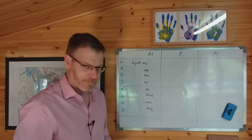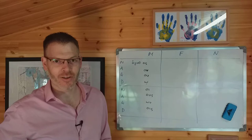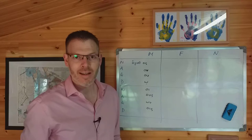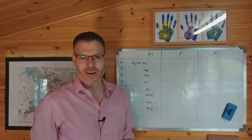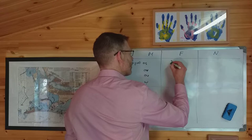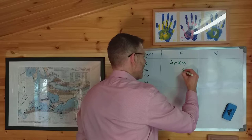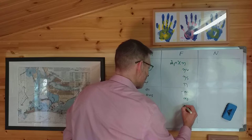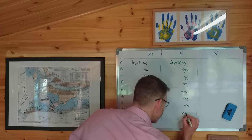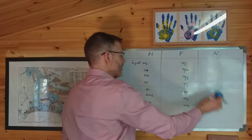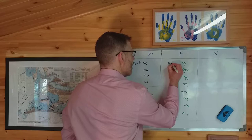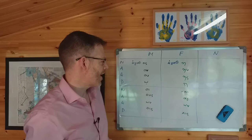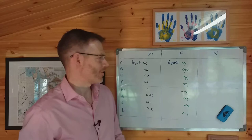For the feminine column, think of a feminine noun you know like arkhe, meaning 'a beginning,' and decline it: arkhe, arken, arkes, arkhe, arkhai, arkas, arkon, arkais. What are you going to do for the adjective? Very simple — just replace the stem of the noun with the stem of the adjective in exactly the same way: agathe, agathen, agathes, agathe, agathai, agathas, agathon, agathais.